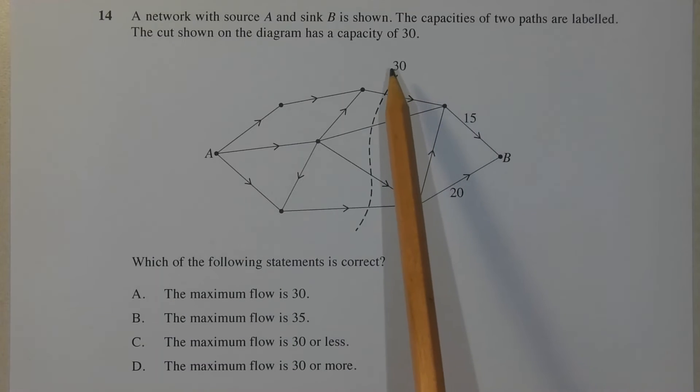But since we're not told whether this is the minimum cut or not, there may exist a cut somewhere else on the network with a lower capacity than 30. Let's say for argument's sake, 25. That would mean then that this value here, 30, will represent the absolute maximum that this network can flow. And since there is a possibility that there may be a cut of lower value than 30, that would mean that the maximum flow of this entire network can be no more than 30. In other words, it'd have to be 30 or less. Therefore, the correct answer is option C.